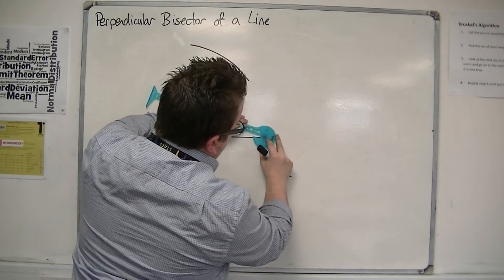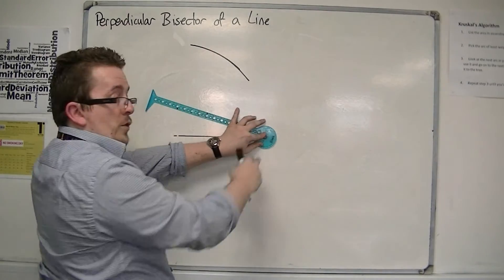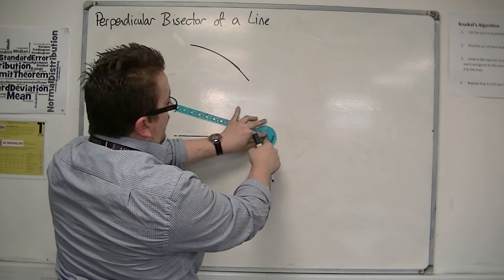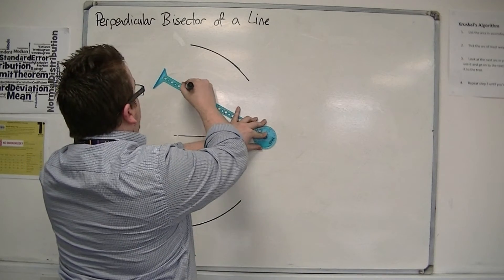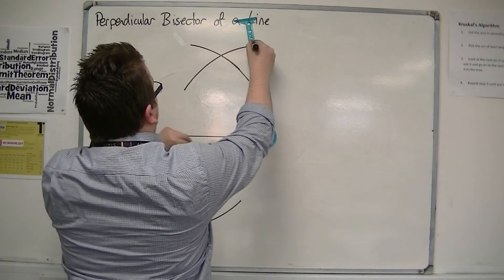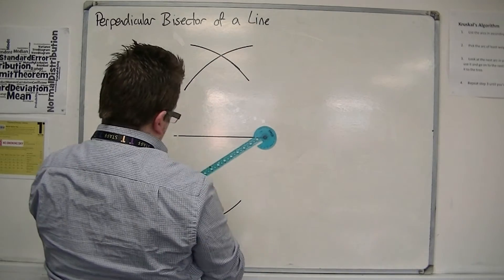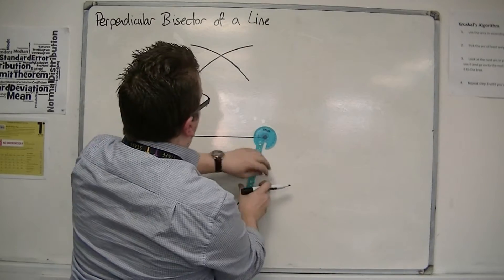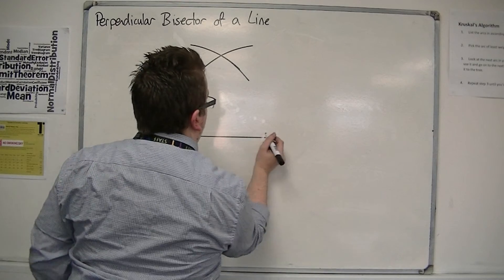And then do exactly the same thing with the other corner. Compass point on that corner, make an arc the same length as before. One arc above, one arc below.